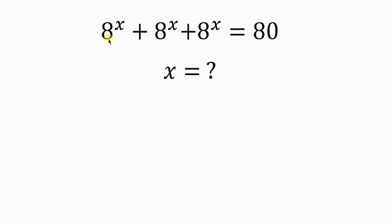Let's solve for x, given that 8 to the x plus 8 to the x plus 8 to the x is equal to 80. When I add 8 to the x plus 8 to the x plus 8 to the x, I get 3 of 8 to the x. This is equal to 80.